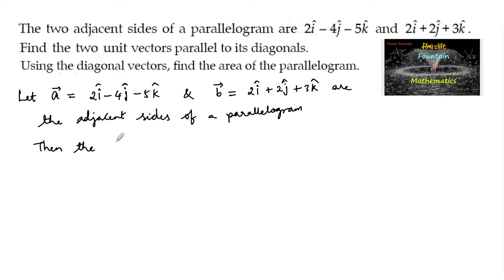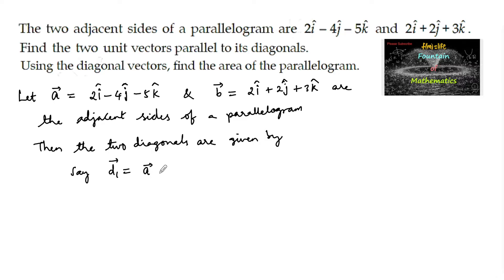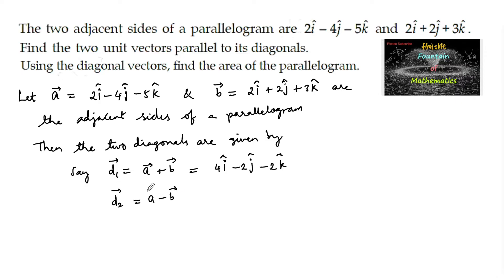The two diagonals are given by: d1 = vector a + vector b = (2+2)i + (-4+2)j + (-5-3)k = 4i - 2j - 8k. Wait — 4i - 2j - 2k. And d2 = vector a - vector b = (2-2)i + (-4-2)j + (-5-3)k = 0i - 6j - 8k.